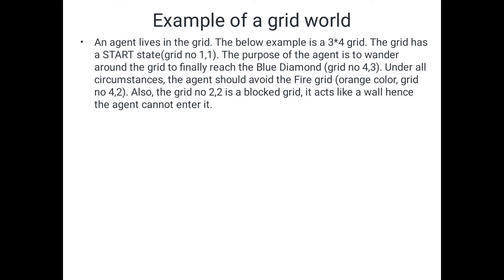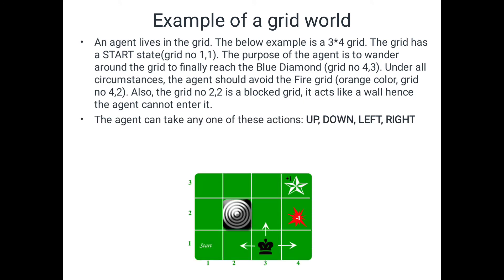In today's session we will discuss one small example of the Markov Decision Process using a grid. Here I will consider a 3 by 4 grid. In the x-axis we have four points and in the y-axis we have three points. The start is at grid location (1,1). The agent is located at (3,1) and the agent's aim is to move to the diamond, which is available at location (4,3) — the blue diamond. When the agent reaches the diamond it receives a reward.